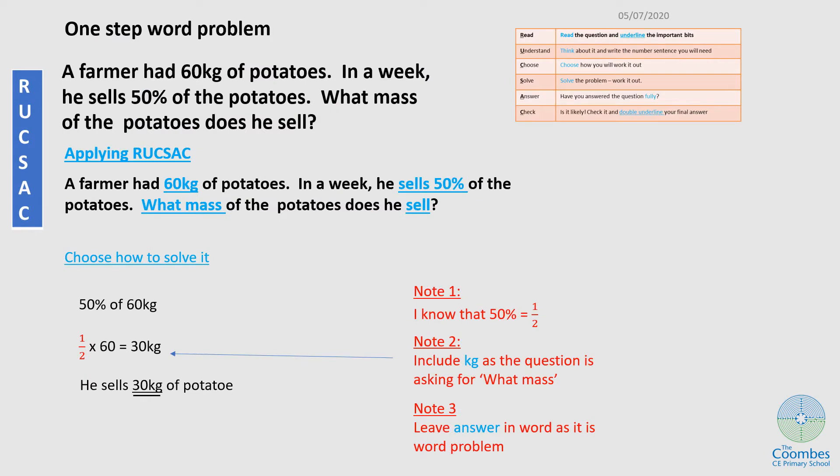Here is a one-step word problem. A farmer had 60 kg of potatoes. In a week, he sells 50% of the potatoes. What mass of the potatoes does he sell?